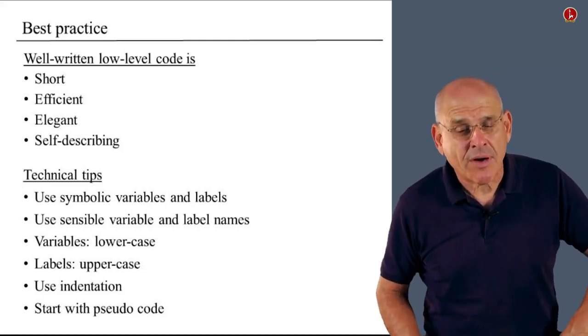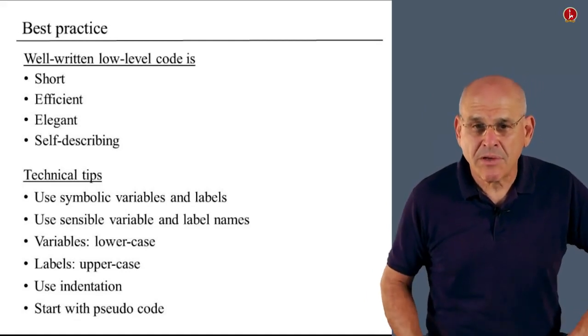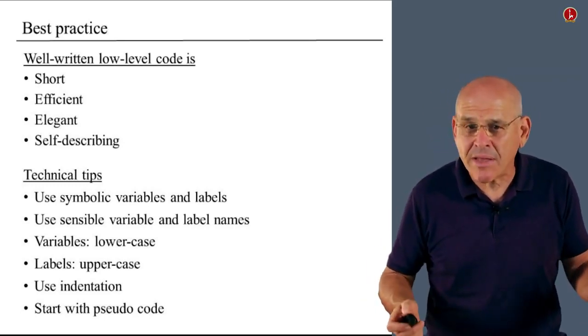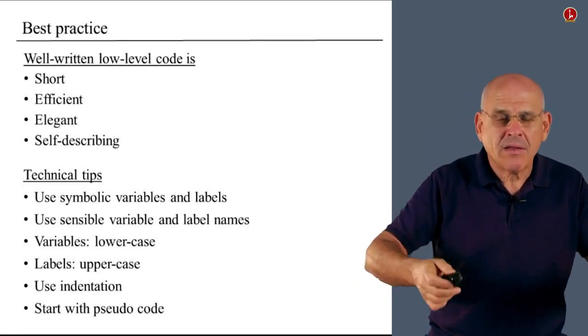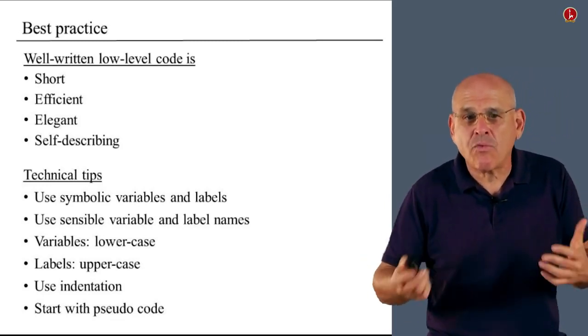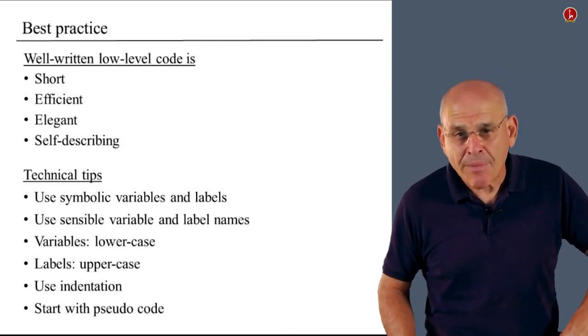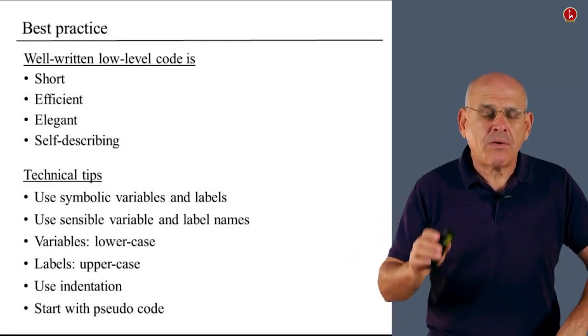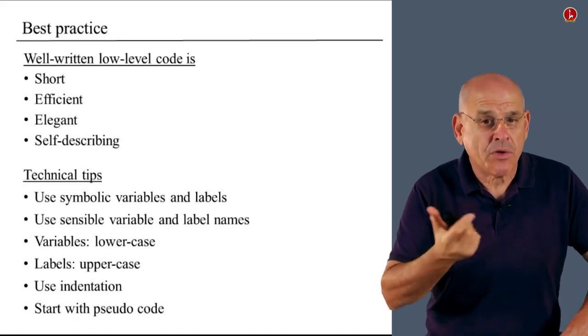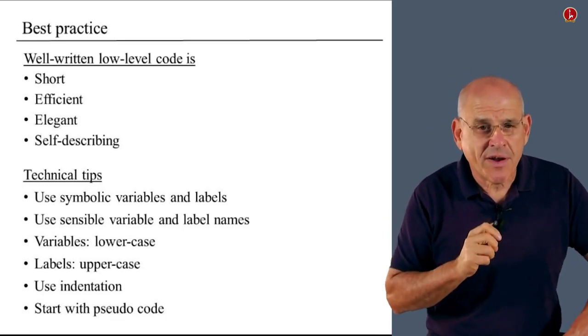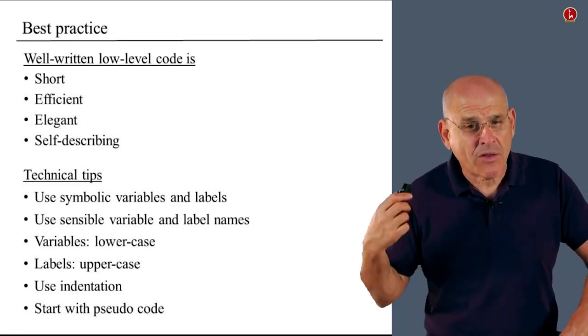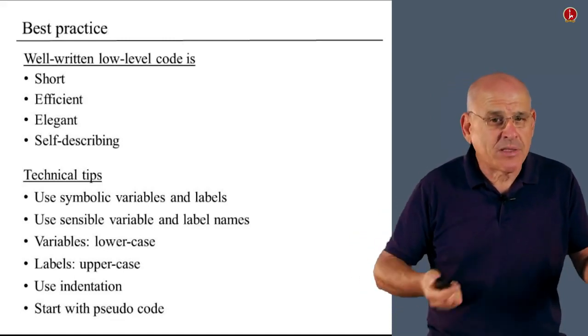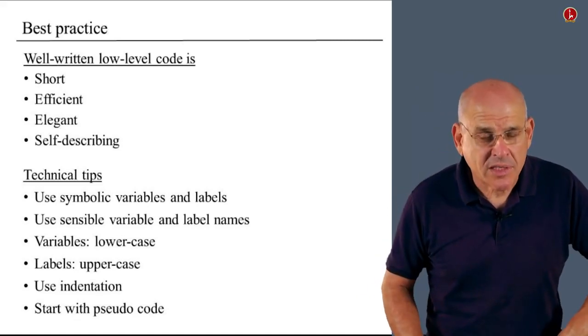When you invent your variables and your labels, as usual in programming, use sensible names. Don't make cryptic names like GU5 three ampersand or something like this. Use instead something like loop, end, stop, positive, negative. Depending on what is it that you want to do, try to use sensible label names. And likewise, variable names. Use nice names like i, n, sum, count, and so on. Now, when you declare or when you use these variable names, use lowercase for variables and uppercase for labels. If you go back to our program examples, you will see that all the labels, typically words like end and stop were uppercase. And all the variables, i, n, x, y, and so on, were lowercase.